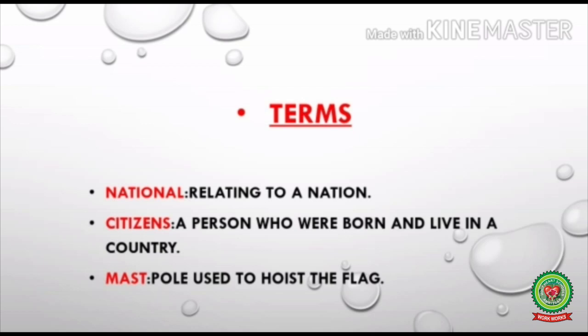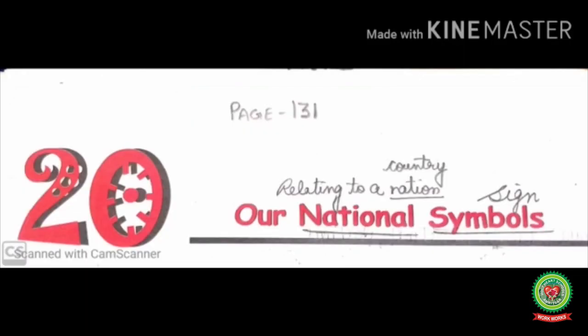Now let us discuss the key terms of today's topic. Number one: national means relating to a nation. Number two: citizens means a person who was born and lives in a country. Number three: mast means a pole used to hoist the flag. Also, nation means country, and symbol means sign.